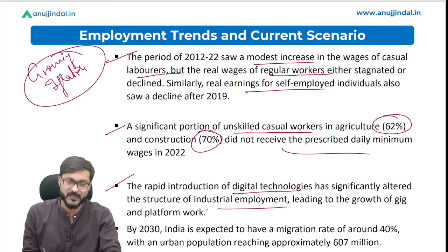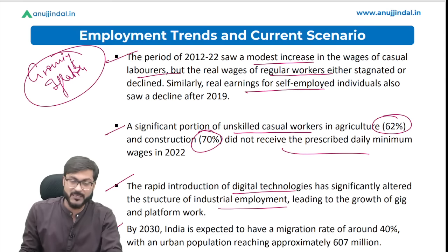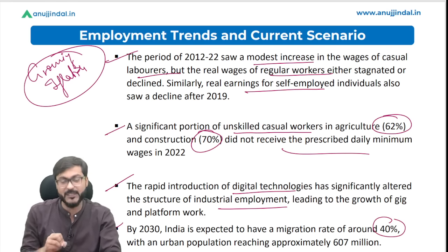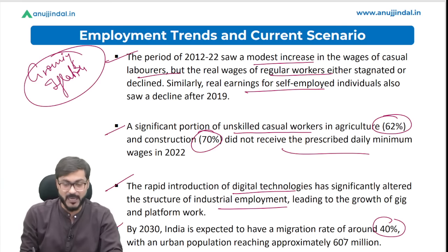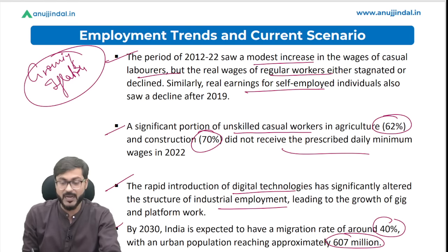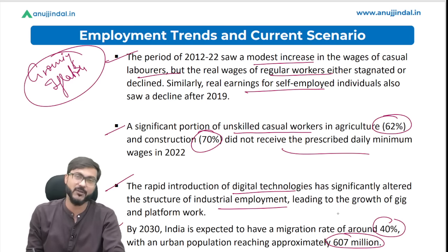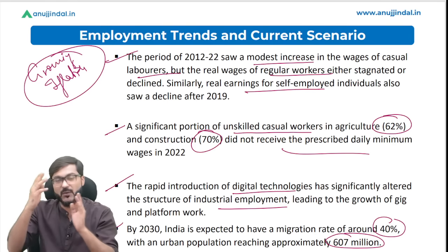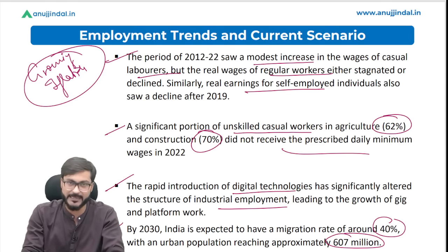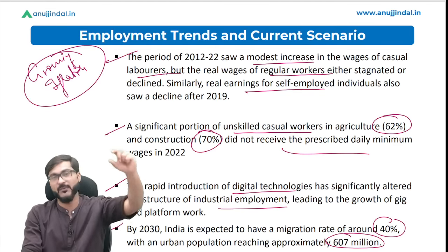An important fact highlighted by this report is that by 2030, India is expected to have a migration rate of around 40 percent, which will lead to an increase in the urban population to 677 million. This will create huge pressure on urban areas, and there is a need to develop rural areas or at least provide equivalent livelihood opportunities in rural regions.